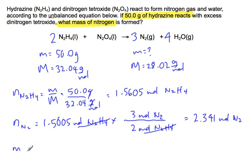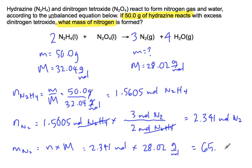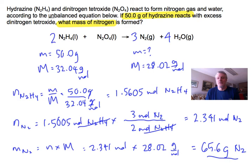The last step: mass of nitrogen equals number of moles times molar mass — 2.341 moles times 28.02 grams per mole — equals 65.6 grams of nitrogen. That is the fairly straightforward process for going from the mass of a known substance — in this case hydrazine — to the mass of an unknown — in this case nitrogen — using your balanced equation, molar masses, and equation factors. That's the mole method, and that concludes this video.